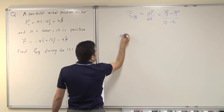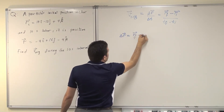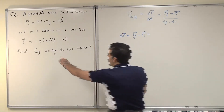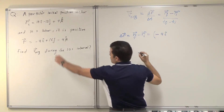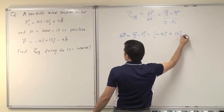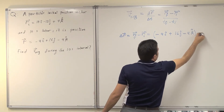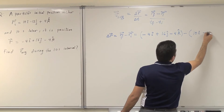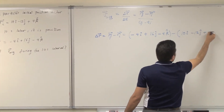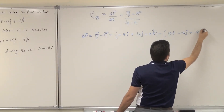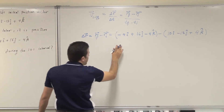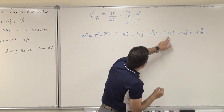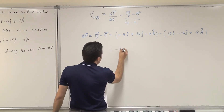I can find displacement, or delta r, which is r-final minus r-initial, by subtracting the two positions. So r-final is minus 4i-hat plus 16j-hat minus 4k-hat, minus the initial position, which is 10i-hat minus 12j-hat plus 4k-hat. I add or subtract the i-hat components together, j-hat with j-hat, and k-hat with k-hat. So minus 4i-hat minus 10i-hat is minus 14i-hat.